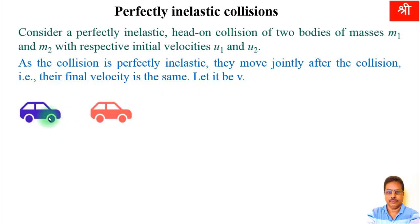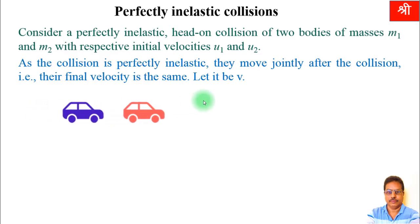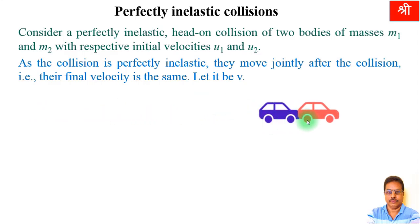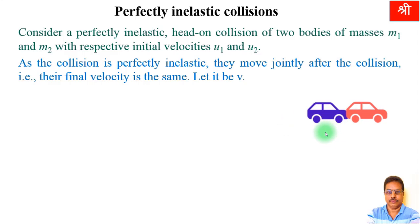Suppose these are two bodies — two cars — having masses M1 and M2. Mass of first car is M1, that of second car is M2. Their initial velocities are U1 and U2. After some time they collide and after collision, they move with common velocity V.